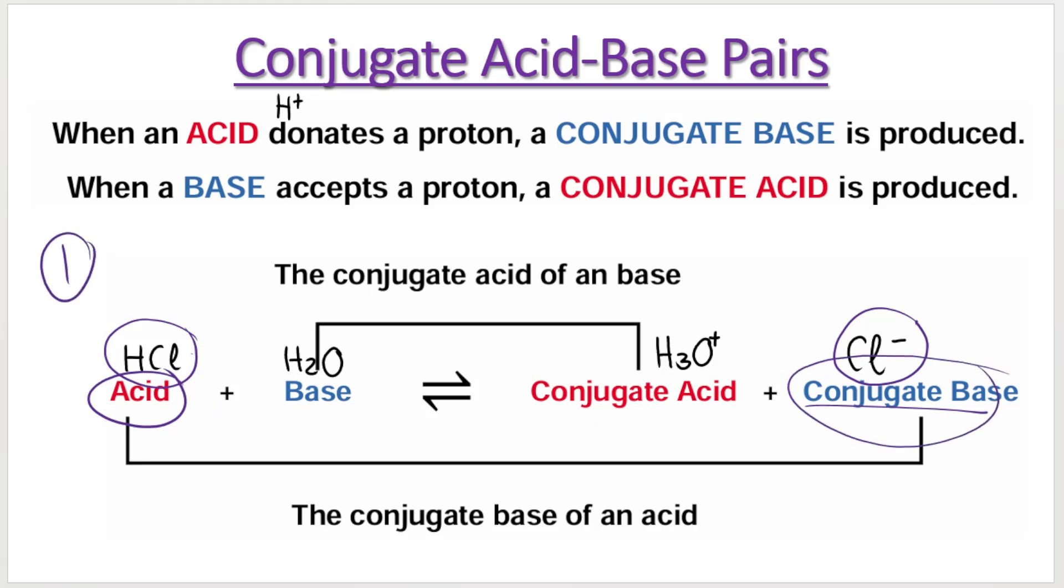Then the base forms a conjugate acid. So the base accepts a proton. This base, H2O, accepts a proton and forms H3O+, making it a conjugate acid. So base becomes a conjugate acid.